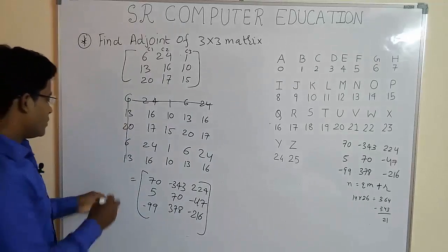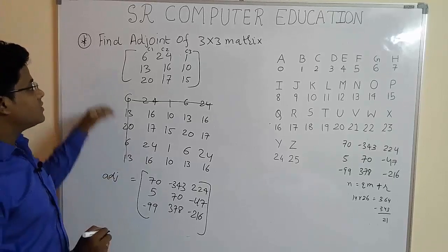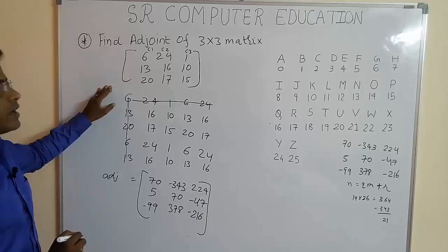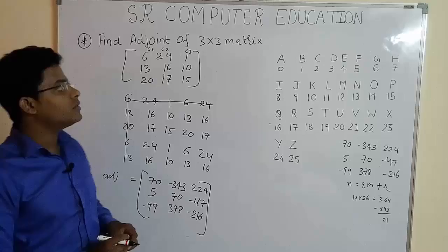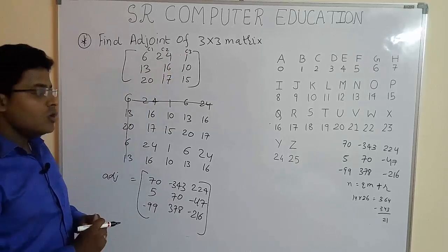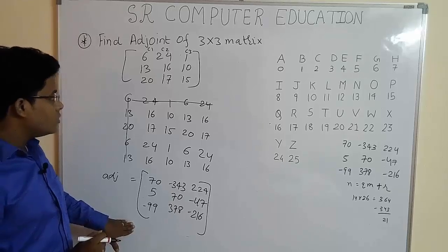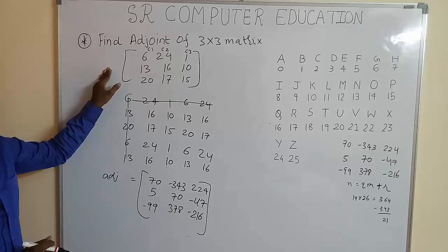So, this is your adjoint. This is a shortcut method to find the adjoint of 3 cross 3 matrices. Now, in Hill cipher, when you find the adjoint of 3 cross 3 matrices, you will come to this kind of adjoint matrices method.